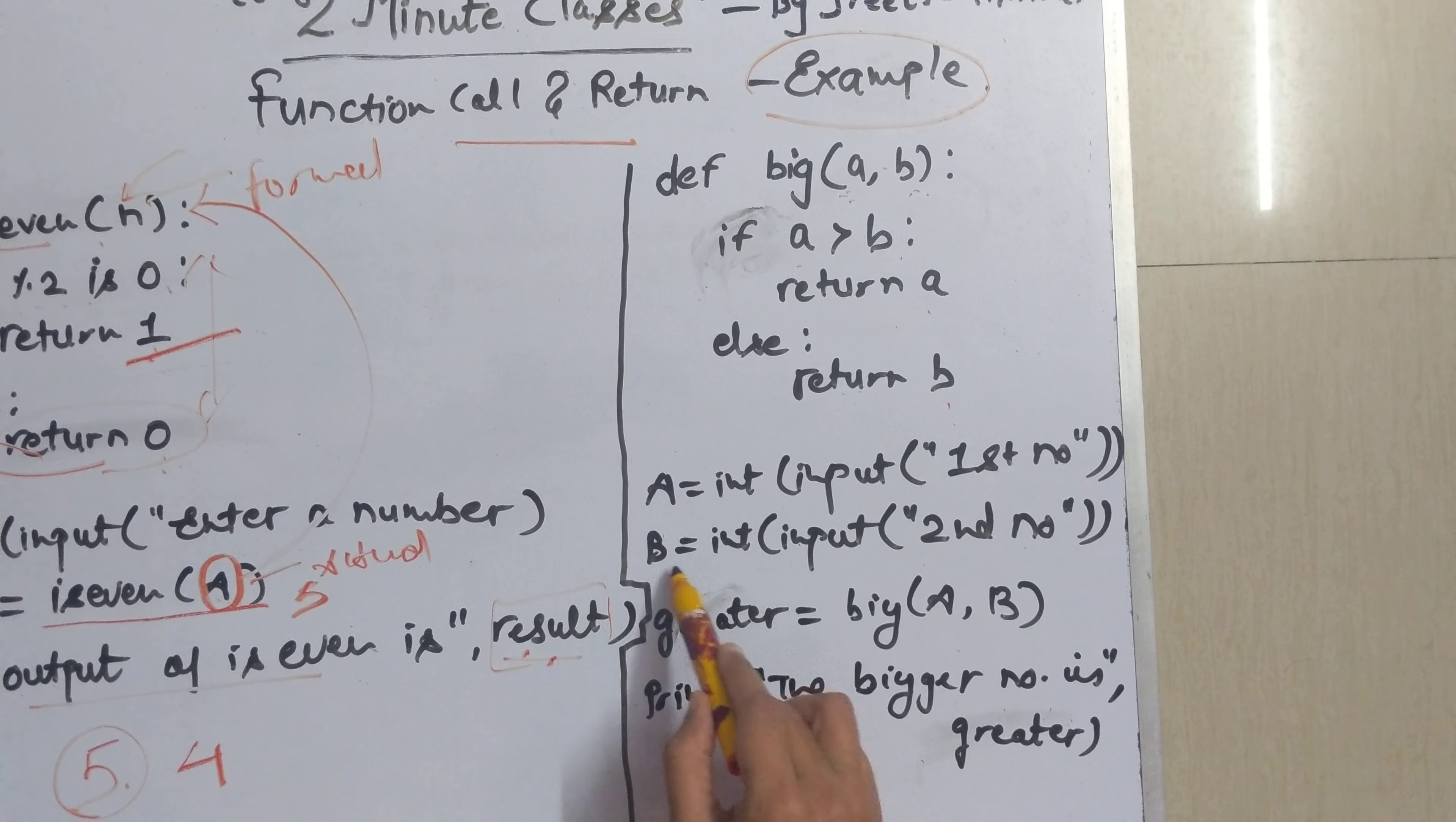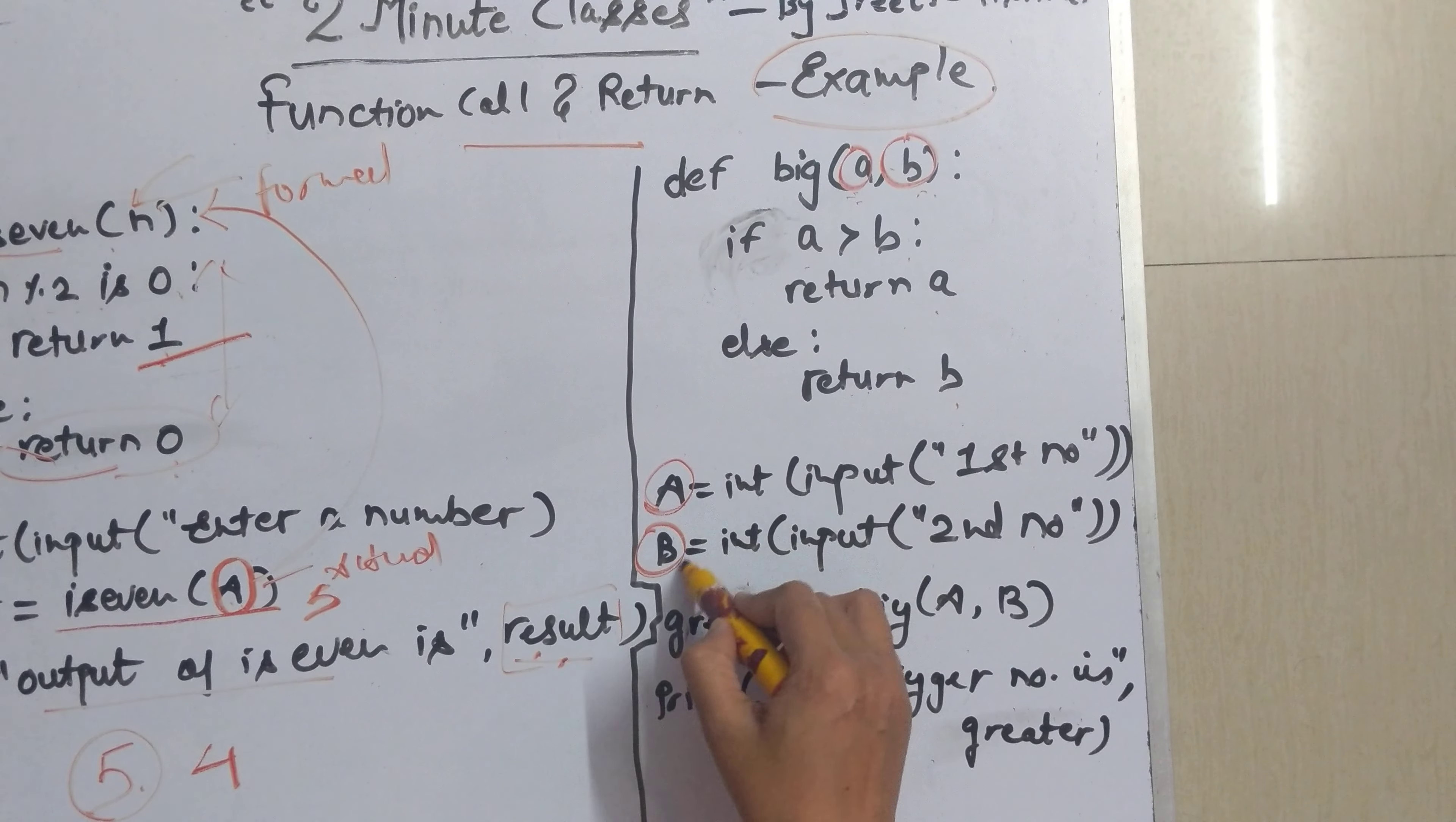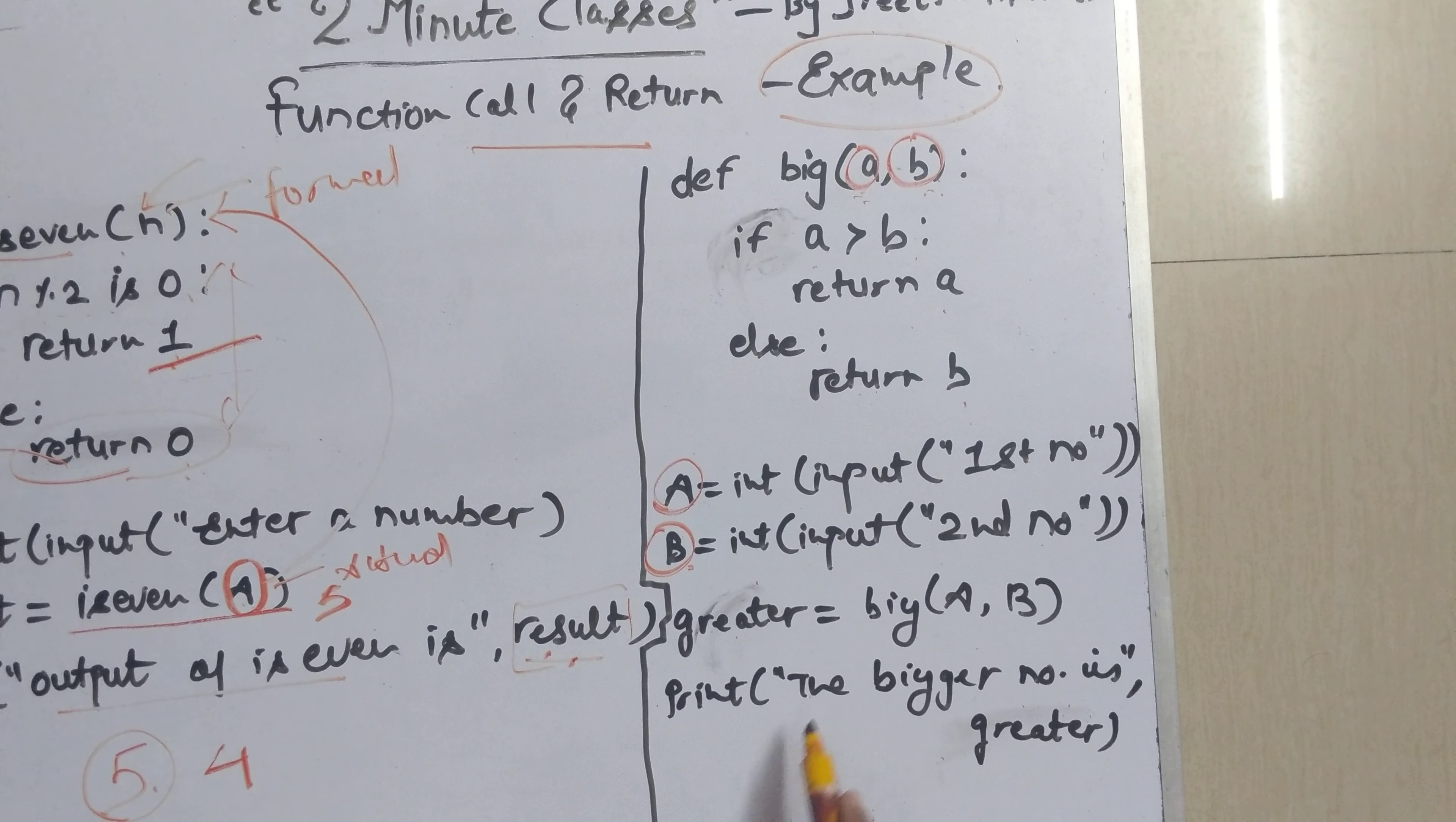Here I have taken the input of two numbers a and b. So I have taken different variable names over here and different variable names over here. Again to emphasize on the fact that these variables are different than these variables. Now I have called this function big with variables a and b and I have taken the output in greater.